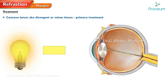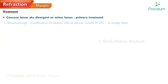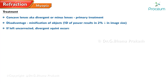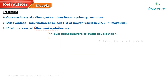The primary treatment option for myopia is concave lenses, also known as divergent or minus lenses. One disadvantage of using a minus lens is that it causes the minification of objects, with every 1 diopter of power resulting in a 2% reduction in image size. If left uncorrected, myopic patients may develop divergent squint, a condition where the eyes point outward to avoid double vision, which can further lead to binocular vision problems.